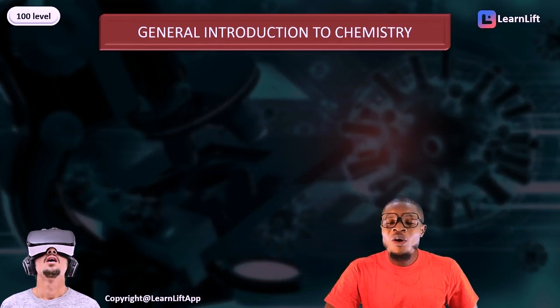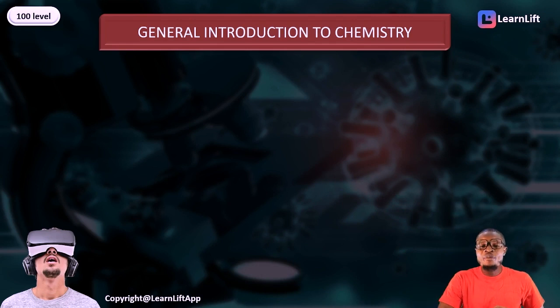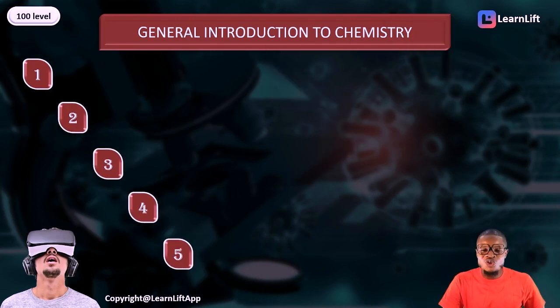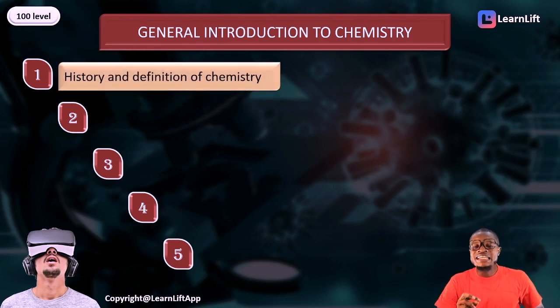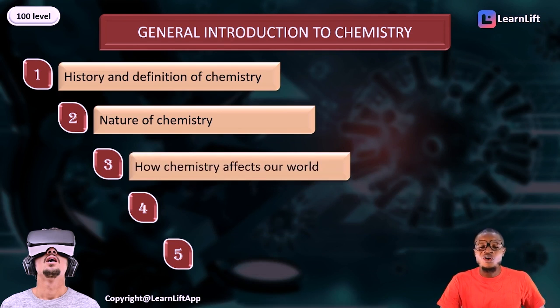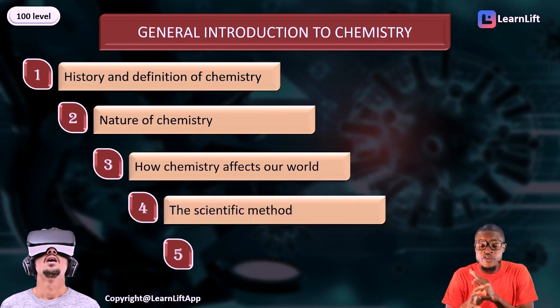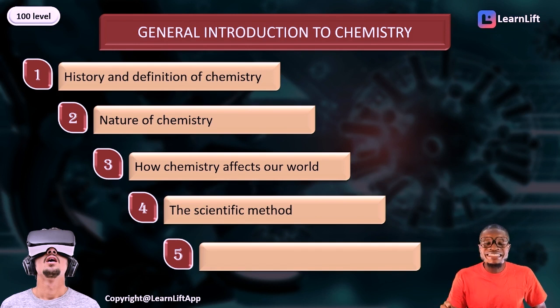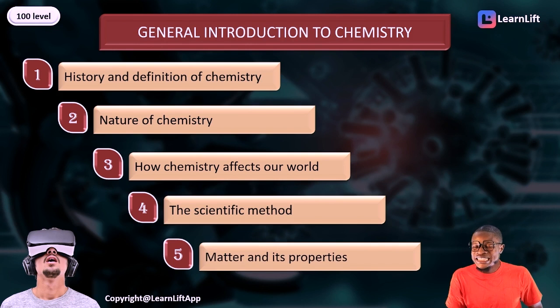We're going to begin with inorganic chemistry, focusing on chapter one. We'll be looking at five topics under the general introduction to chemistry: first, the history and definition of chemistry; second, the nature of chemistry; third, how chemistry affects our world; fourth, the scientific method; and fifth, matter and its properties.